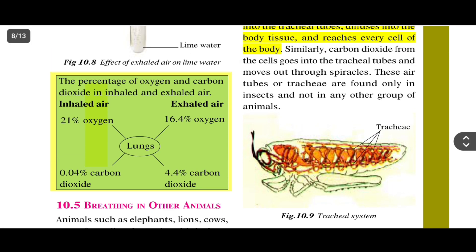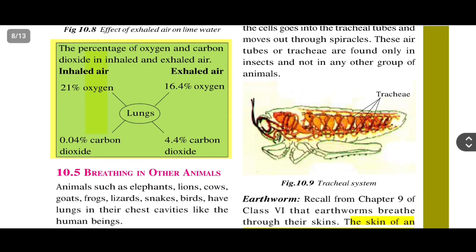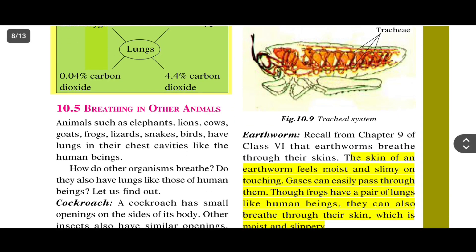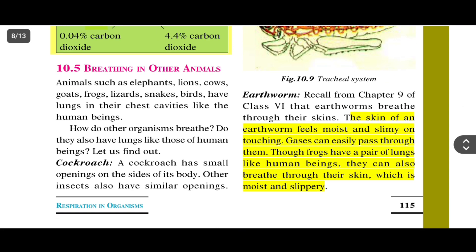Similarly, carbon dioxide from the cells goes into the tracheal tubes and moves out through the spiracles. These air tubes called trachea are found only in insects and not in other groups of animals. Carbon dioxide is released from the cell, moves into the tracheal tube, and then comes out through the spiracles.